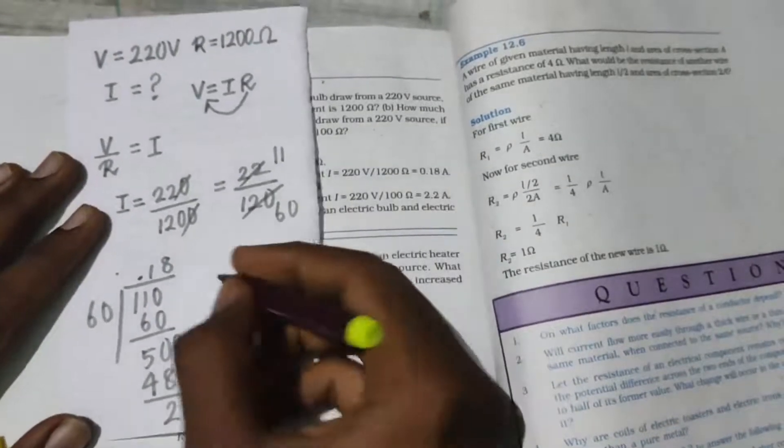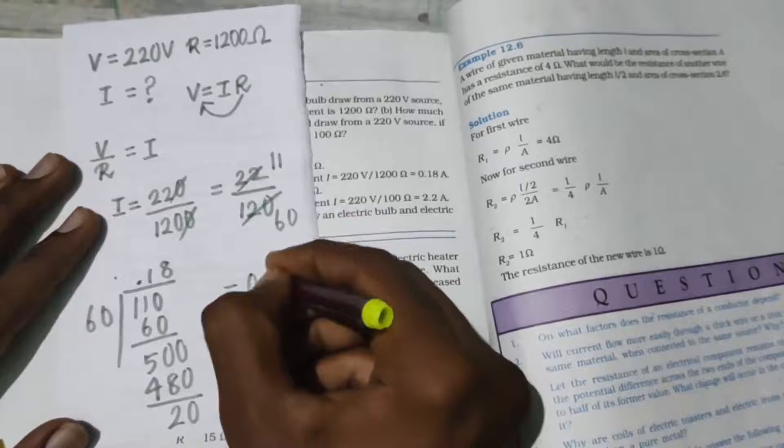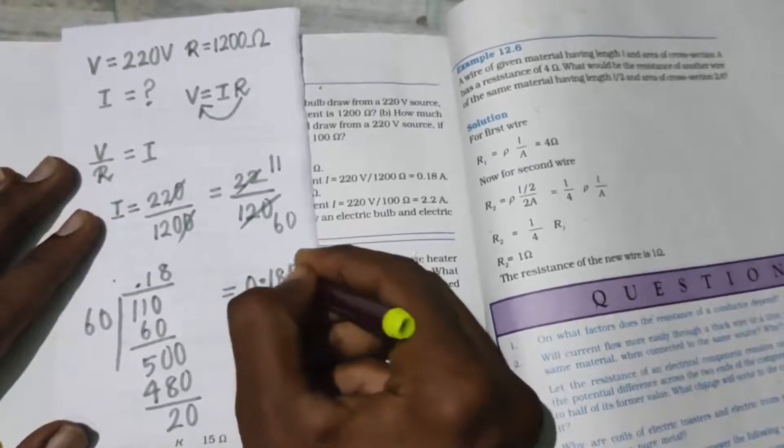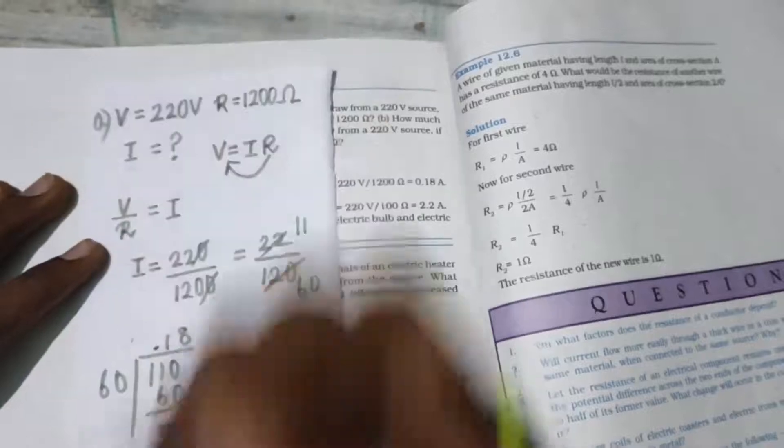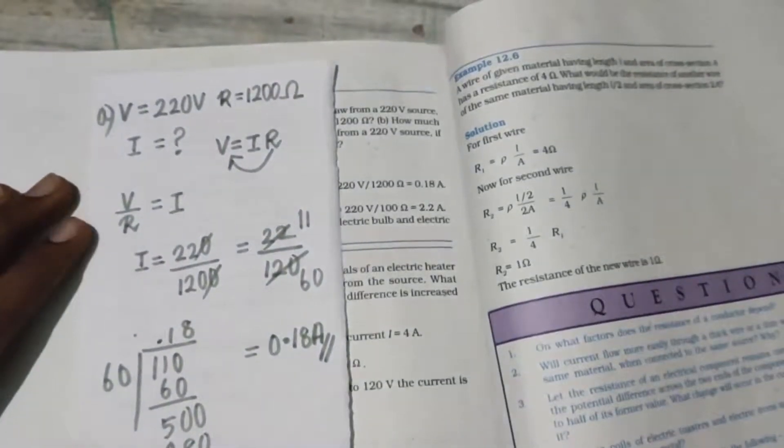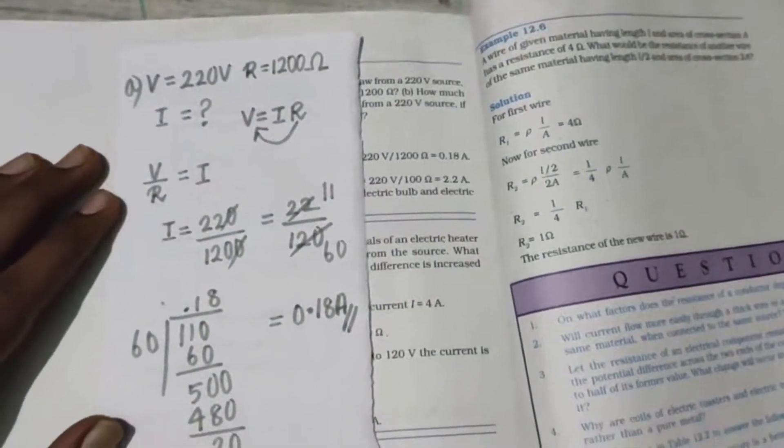So we get 0.18 ampere. This is part A of this question. Very simple question: V, I, R. You do I = V/R, a very simple question, right kids?